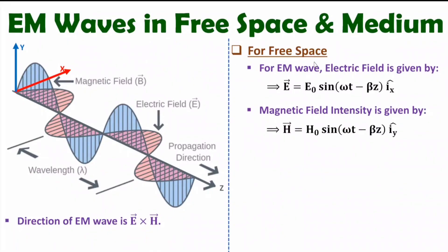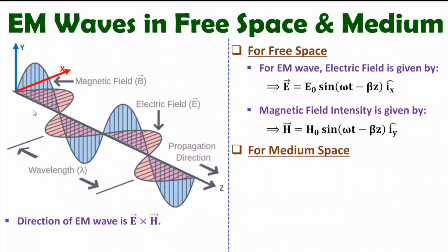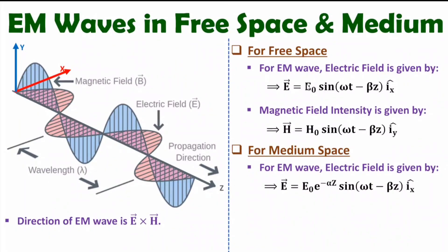Now let me explain electromagnetic waves in medium. In free space, attenuation is minimum — the attenuation constant is 0. But in a medium, there will be attenuation of both electric field and magnetic field, and that attenuation depends on the attenuation constant. In medium, the electromagnetic wave equation is similar, but we add the factor e^(−αz), where alpha is the attenuation constant that depends on the medium. So the signal deteriorates with respect to distance Z — as distance Z increases, the amplitude decreases based on attenuation constant alpha.